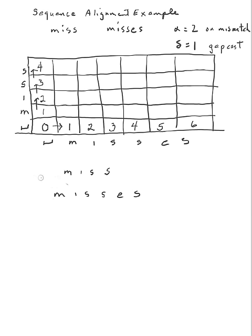For the first interior cell I can arrive from three directions. Coming from above means advancing along 'miss' but not 'misses' — inserting a blank — giving 1+1=2. Coming from the left means advancing along 'misses' but not 'miss' — also 1+1=2. Coming diagonally means advancing along both, with a perfect match, so 0+0=0. The optimum is zero.